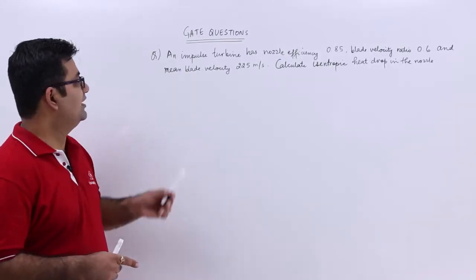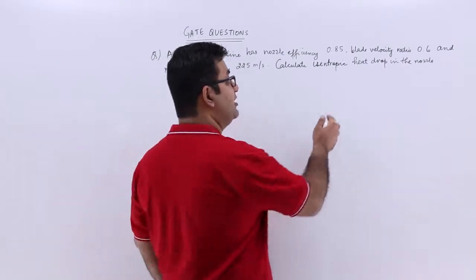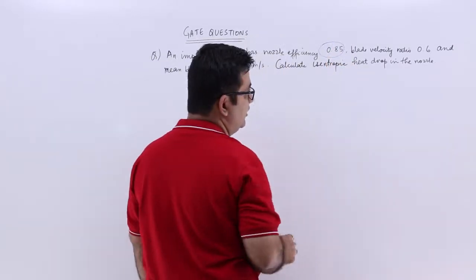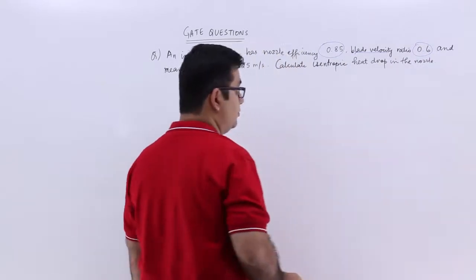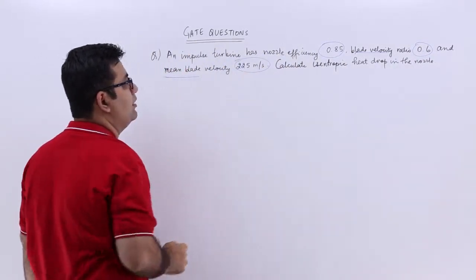Now let's look at question number 16. The question says an impulse turbine has a nozzle efficiency of 85%, the blade velocity ratio is 0.6, and the mean blade velocity is 225 meters per second.